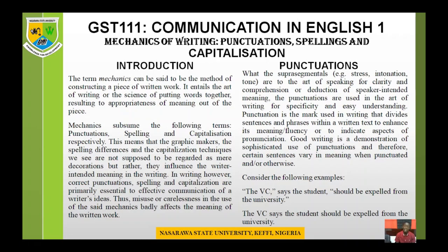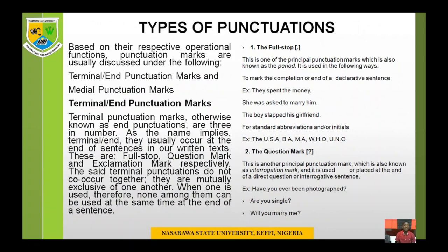For spelling, there are words called homophonous words — words pronounced the same way but having different origins, different spellings, and different meanings. For instance, if you want to write 'right' (r-i-g-h-t), another person might write 'write' (w-r-i-t-e), another 'rite' (r-i-t-e), and another 'wright' (w-r-i-g-h-t). There would be four different meanings altogether because of spelling problems. These are called mechanics of writing because they fix our writing for appropriate meaning.